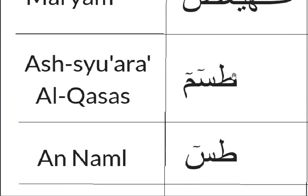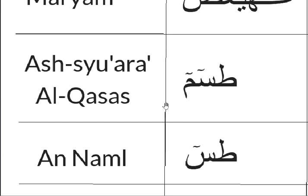Ta-Sin-Mim: Ta — 2 harakat, Sin — 6 harakat, Mim — 2 harakat. Then Ta — 2 harakat, Sin — 6 harakat, Mim — 6 harakat.